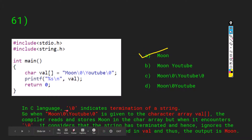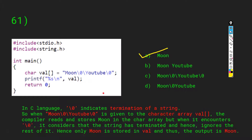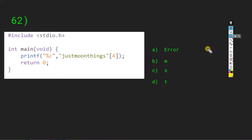In C language, backslash 0 indicates termination of a string. When moon backslash 0 youtube backslash 0 is given to character array val, the compiler reads and stores moon in the char array. When it encounters backslash 0 it considers the string terminated and ignores the rest. Only moon is stored in val, so the output is moon.